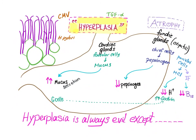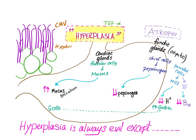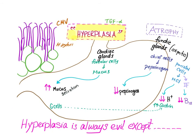Let's go to the pathology — the mechanism of the disease. What causes Ménétrier's disease is still debatable, but it's probably either human CMV virus or H. pylori.